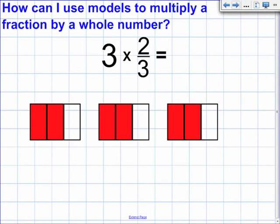For our next problem, we have three times two-thirds. Once again, we are multiplying two-thirds three times, so three of two-thirds.